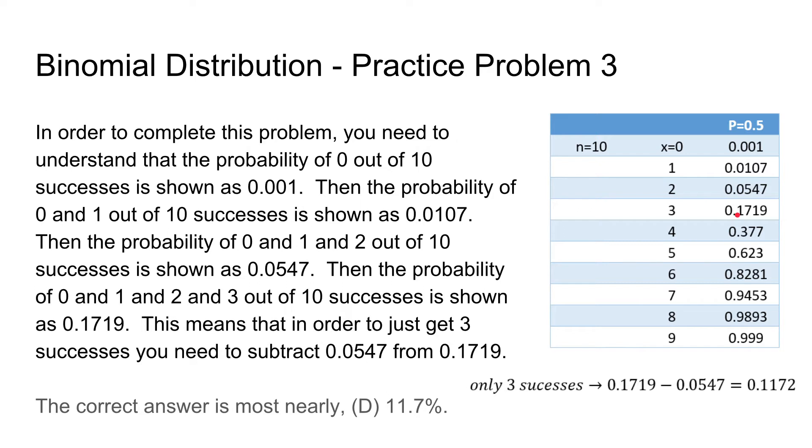and this value, which only includes 0, 1, or 2 successes. So the difference between them is just three successes.